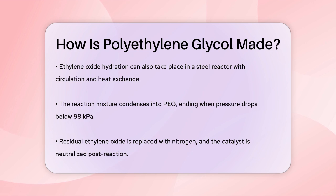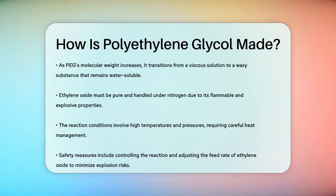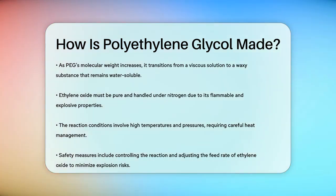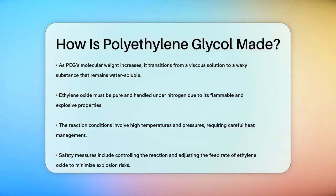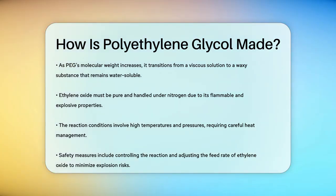The ethylene oxide used must be pure and handled under nitrogen protection due to its flammable and explosive nature. The reaction conditions are quite harsh, with high temperatures and pressures, and a lot of heat is generated that needs to be managed carefully. To ensure safety, the reaction is carefully controlled, and the feed rate of ethylene oxide can be adjusted to manage the heat released. This method allows for the production of high purity PEG with minimal risk of explosion.